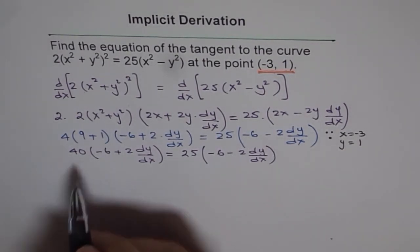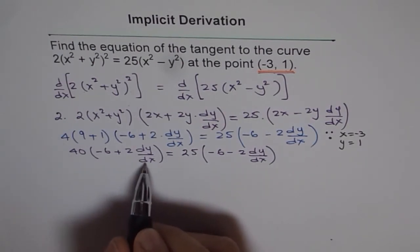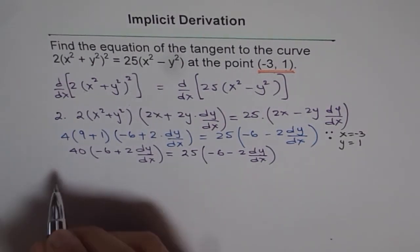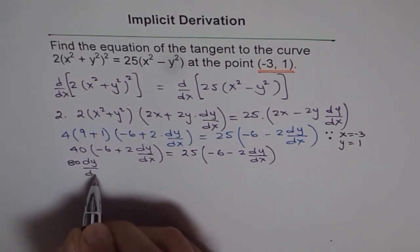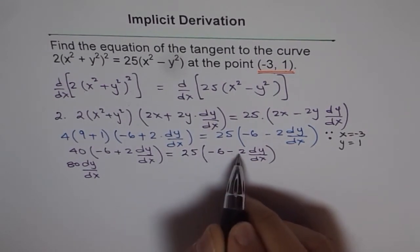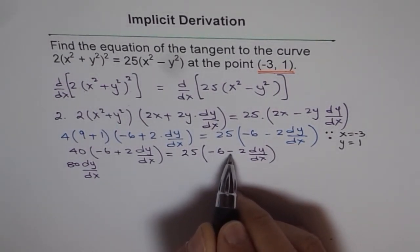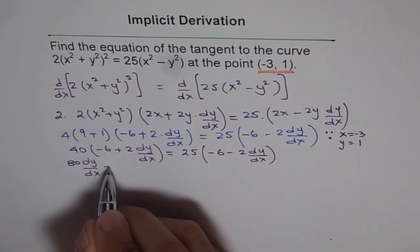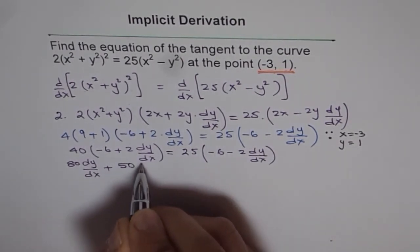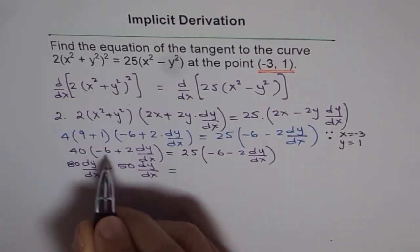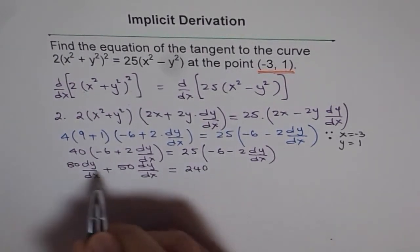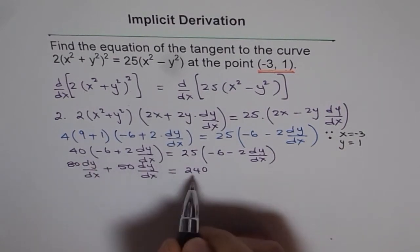So when we bring the terms together, we'll keep dy/dx on this side. So 40 times 2 is 80 dy/dx. And here we have 25 times 2, which is 50. This is a minus sign, so when we bring it on this side, it becomes plus. So we get 80 dy/dx plus 50 dy/dx equals to...